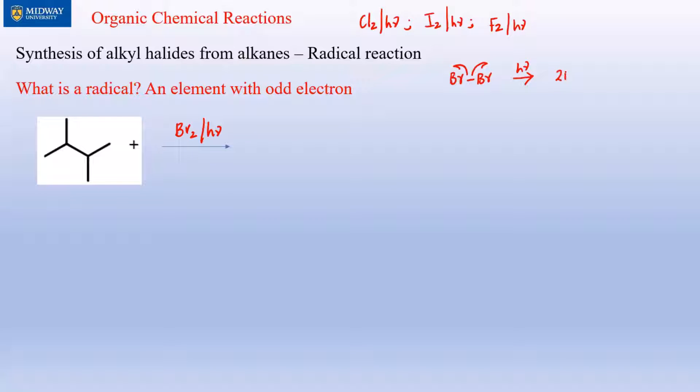One of the Br radicals reacts with the compound. It generally starts from one end and works its way to the other end. This is a methyl group, so we're going to react it with Br2.